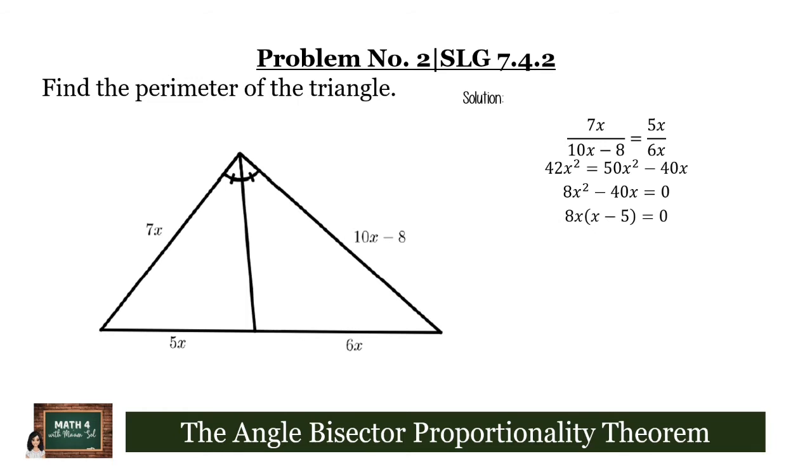By applying the zero product property, we can equate 8x to 0, and that will give us x equals 0. Now, this is an extraneous solution because we know that if we plug in 0 into 7x, this will give us a side which will measure 0, and that shouldn't be possible. So, we get the other factor x minus 5 and equate it to 0, and we will get x equals 5.